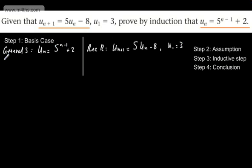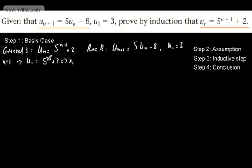We start off with n equal to 1 in the general statement. When n equals 1, we have u_1 equal to 5 to the power of 1 minus 1, which is 5 to the power of 0 plus 2 — that's 1 plus 2, giving us 3. We now take n equal to 2. Subbing this into the general statement, u_2 is 5 to the power of 1 plus 2, which gives us 7.